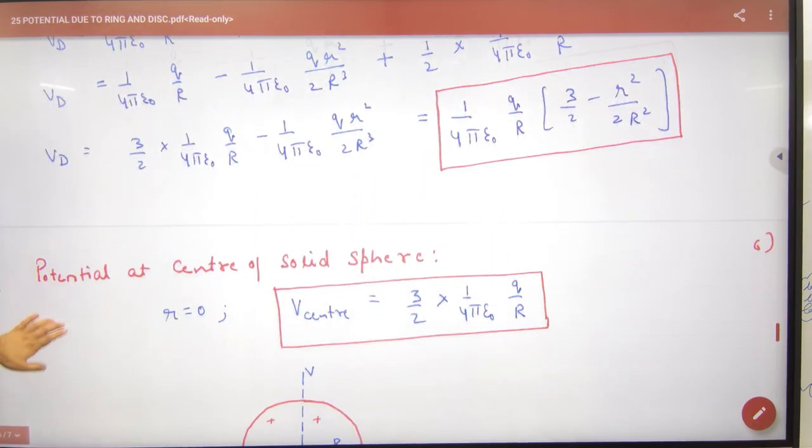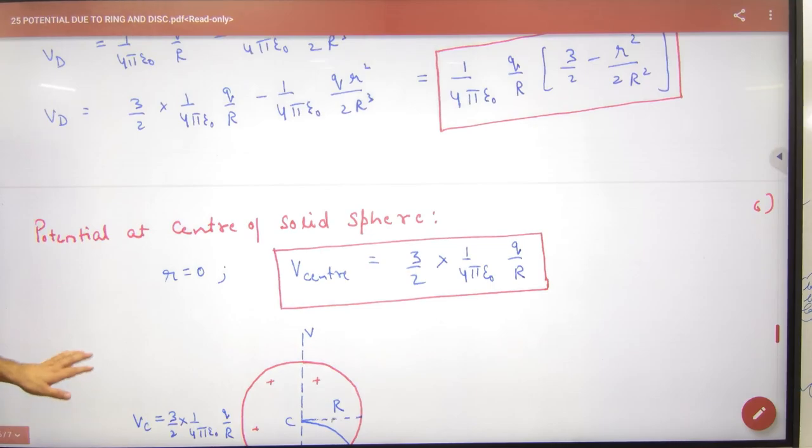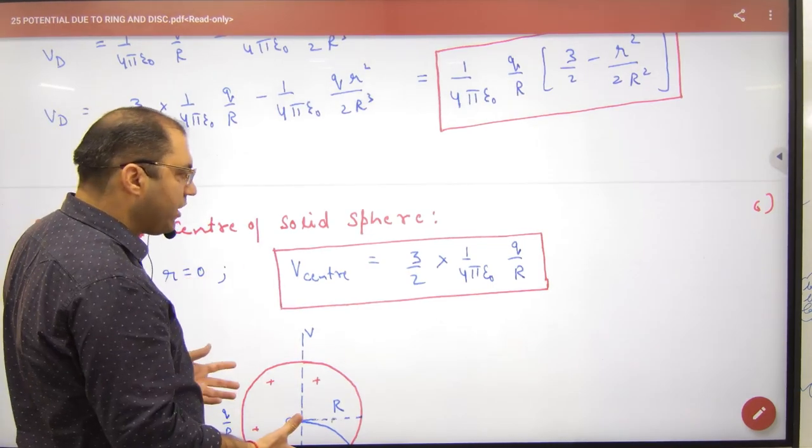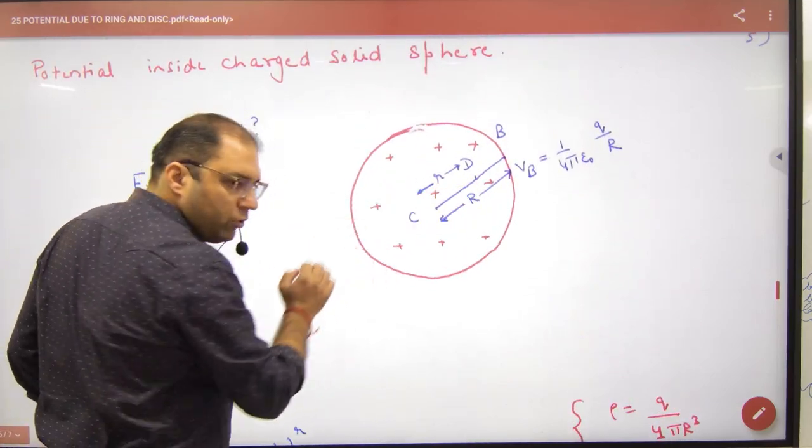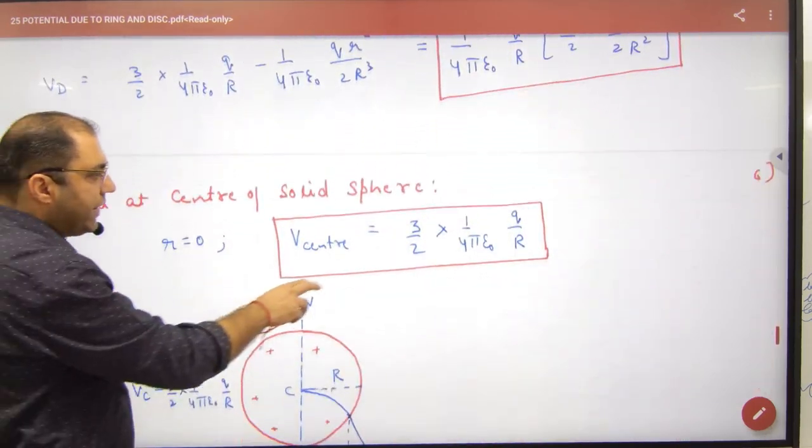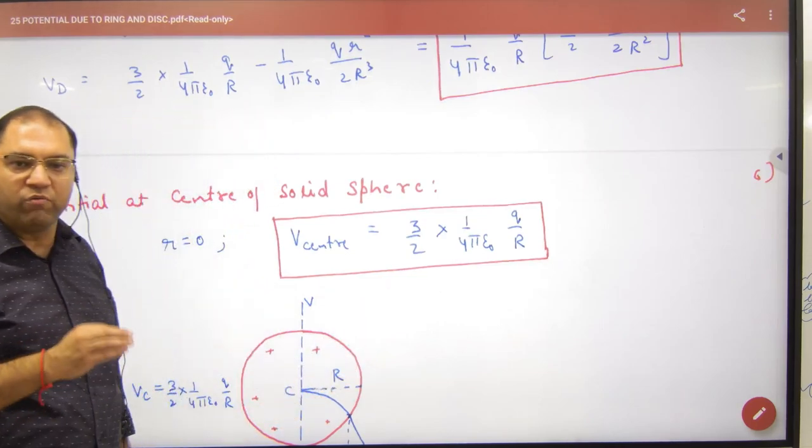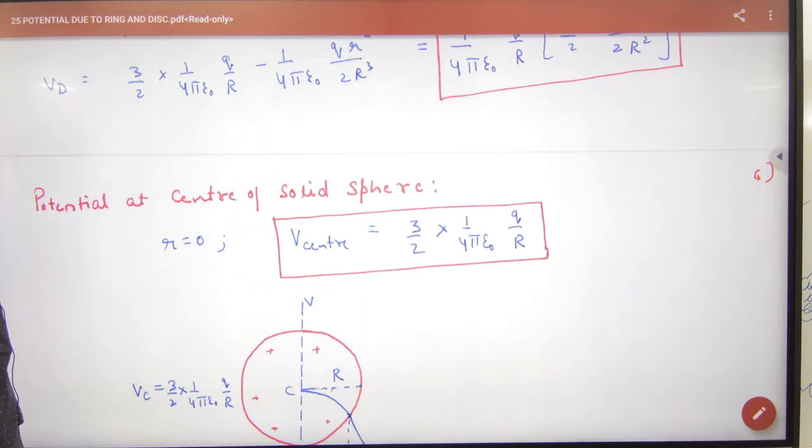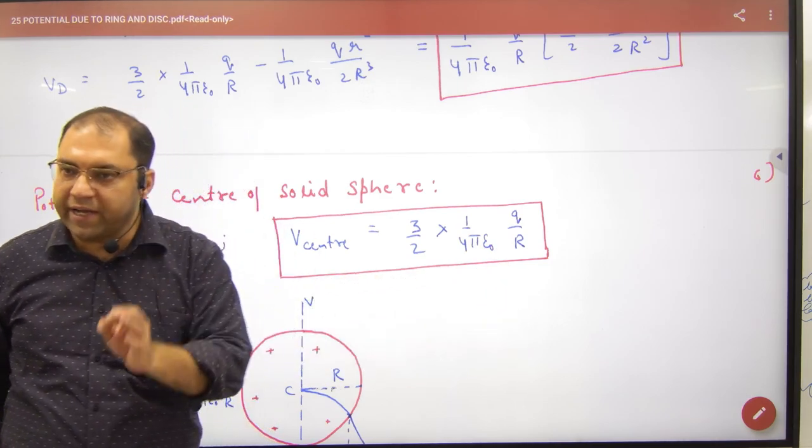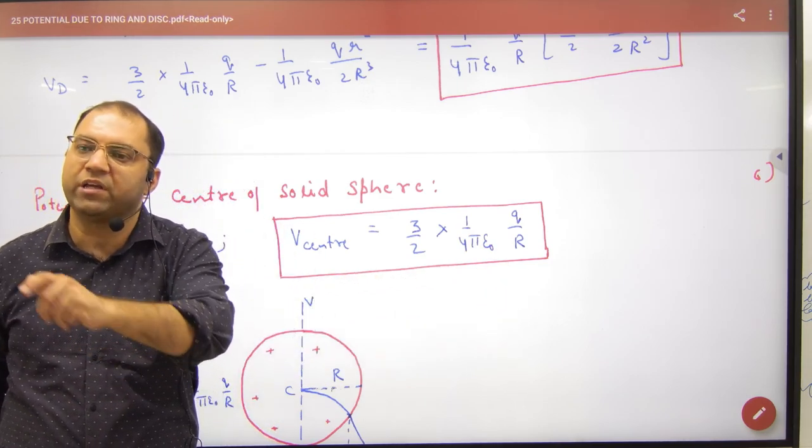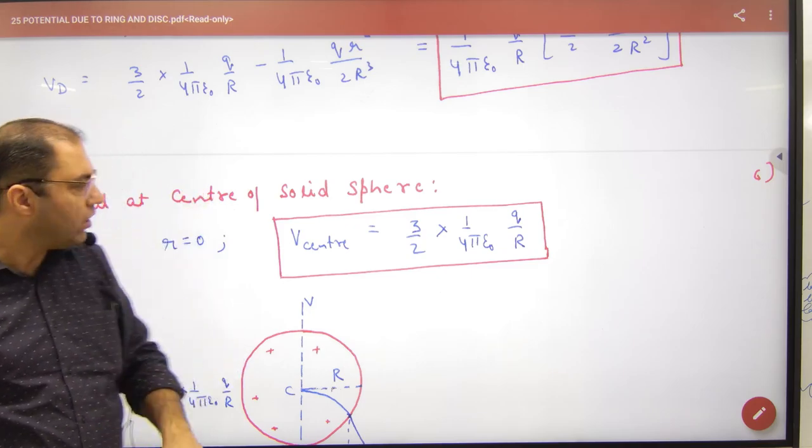So we will remember this formula. And now I will write it. If you want to go to the solid sphere, what should we put here? 0. So point center will come in, so the answer will be 3 by 2 into 1 by 4 pi epsilon not q by R. So the potential surface on the solid sphere, on the center of potential 3 by 2 times. What is the point clear here? So this is V's value.